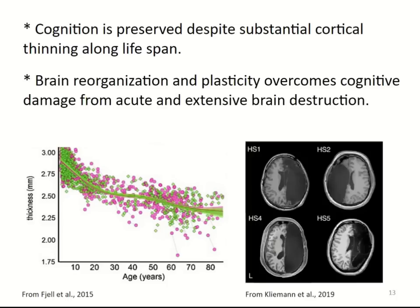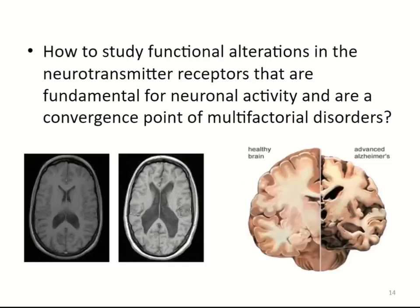Brain reorganization and plasticity can overcome cognitive damage from acute and extensive brain destruction. Work from Klinemann in 2019 reported on kids and teenagers who had received complete hemisphere removal. Obviously there was cognitive damage, but with rehabilitation they were able to have nearly normal lives — one even completed graduate studies. This indicates that in disorders like schizophrenia or Alzheimer's disease, there is a chronic ongoing event where homeostasis, reorganization, and plasticity cannot compensate. The question is how to study functional alterations in the neurotransmitter receptors that are convergence points for multifactorial disorders.